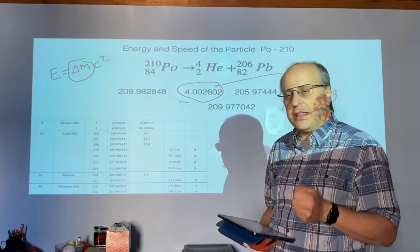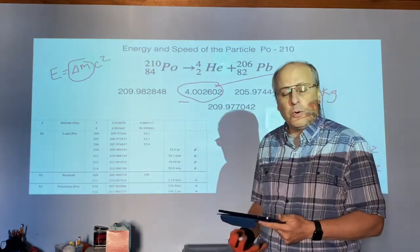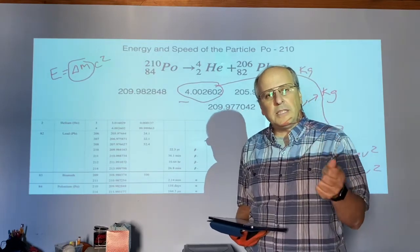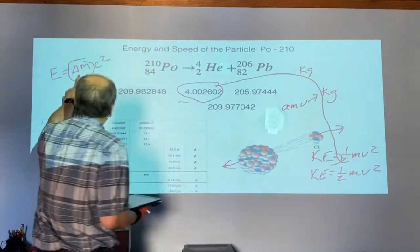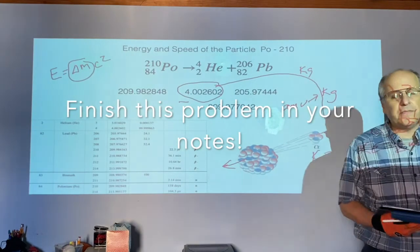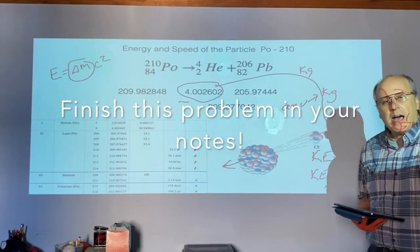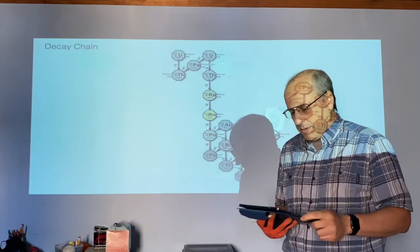So I want to make sure you know how to do this process. Again, it's very similar to what we did before. You find the mass at the beginning, the mass at the end, you subtract, you put it in kilograms, you find the energy. And now we use the energy to find the speed. Higher speeds are more damaging.